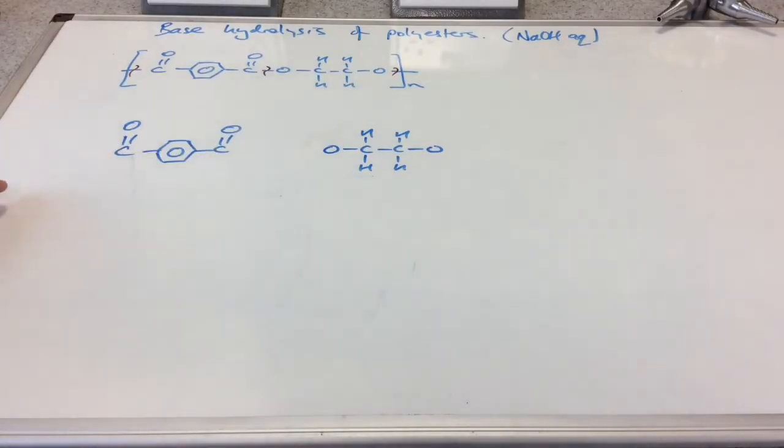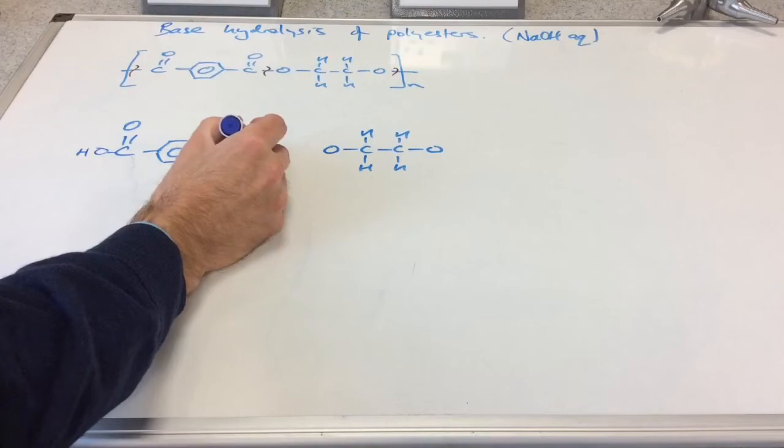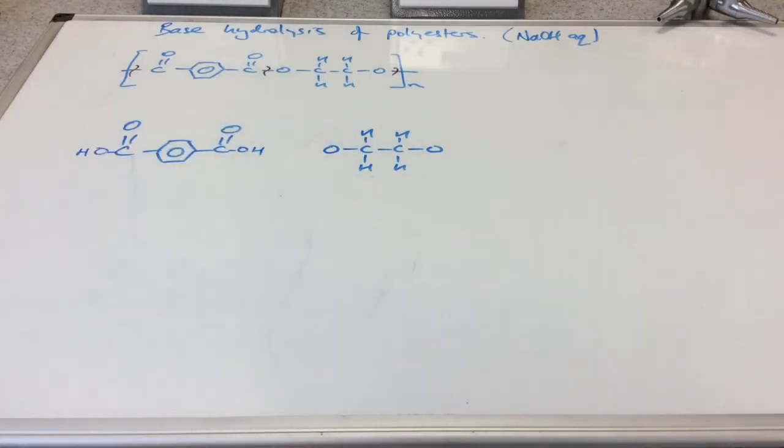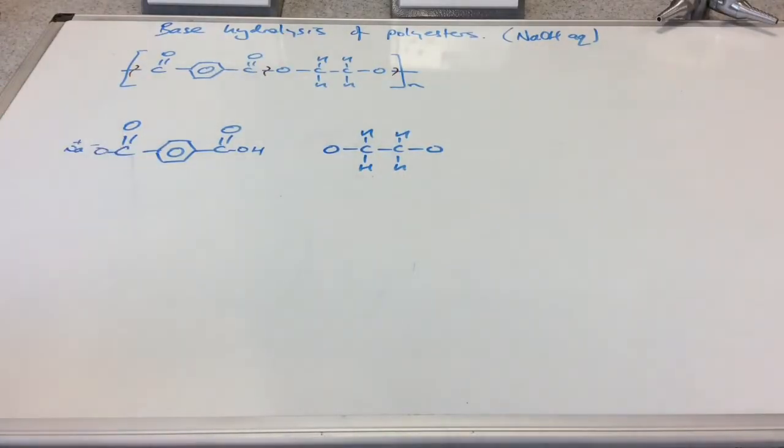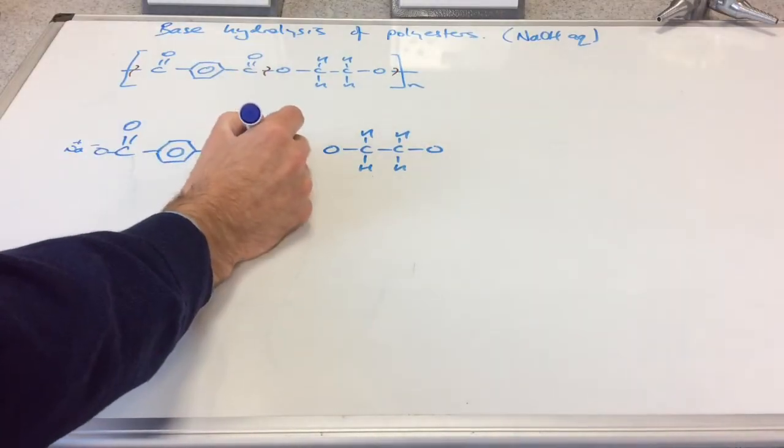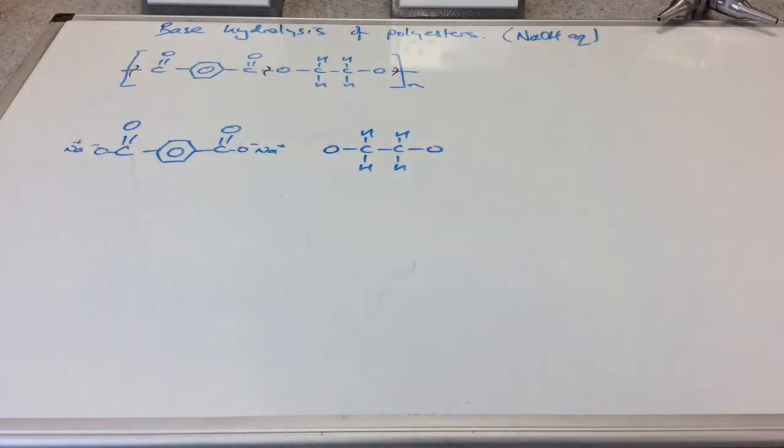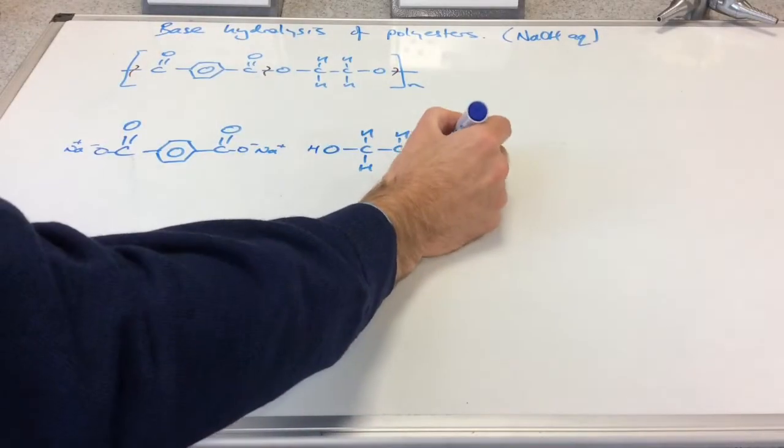In the previous example acid hydrolysis we got OHs going on here. But remember this is base hydrolysis. If you think about it OHs will go on there. But then because there's base present, there's sodium ions present. This H+ will be replaced by the metal ions or sodium ion in the base. So we're actually going to get a salt formed. And we're still going to get this diol.